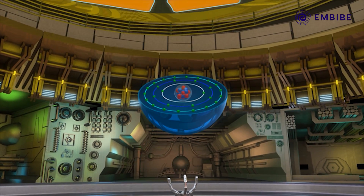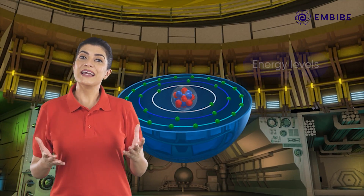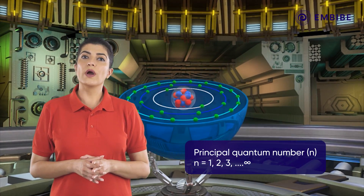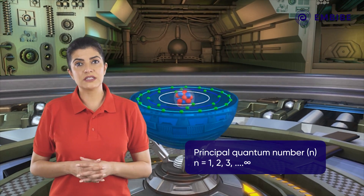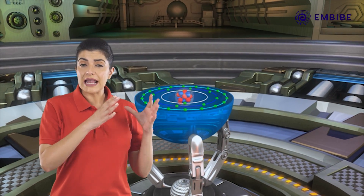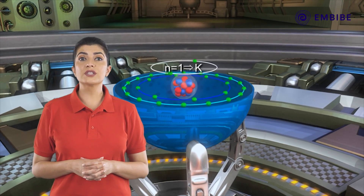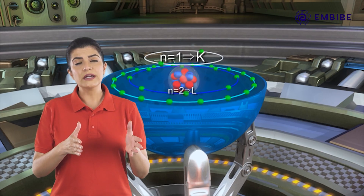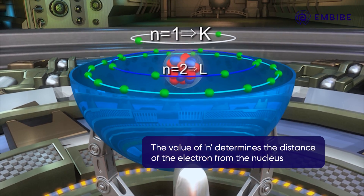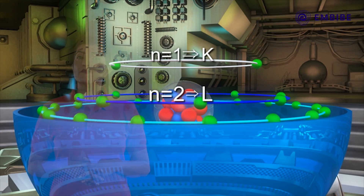According to Bohr's assumptions, electrons move around the nucleus in definite paths known as orbits or shells, also known as energy levels. They are represented by the principal quantum number n, where n can have any non-zero positive integer value. The shell for which n is 1 is called the K shell, and the shell for which n is 2 is called the L shell, and so on.